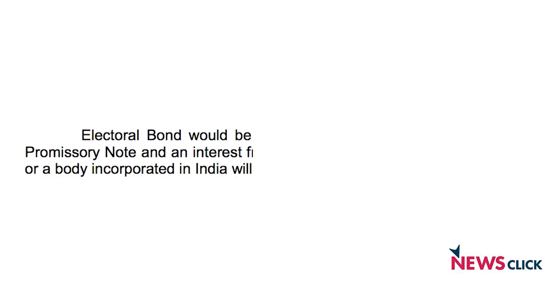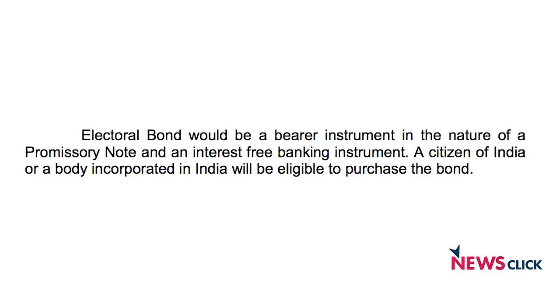The electoral bond is akin to what you might call a promissory note. It's a bearer note, similar to a bank note. It is payable to the bearer on demand, carries no interest, and it can be purchased by any citizen of India or any company registered in India, any entity or group of individuals, Hindu undivided family, and so on. These bonds will be issued in multiples of one thousand rupees, ten thousand rupees, one hundred thousand rupees, ten lakh rupees, and one crore rupees.